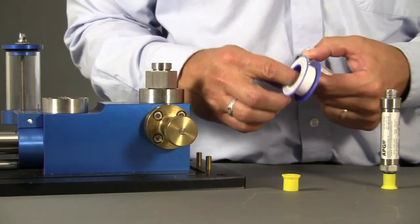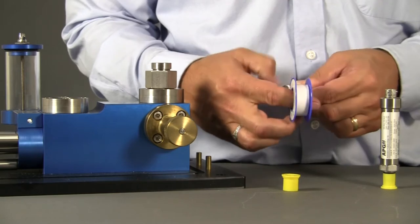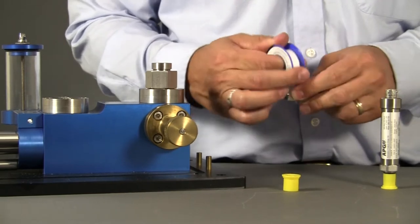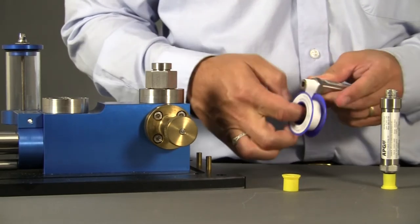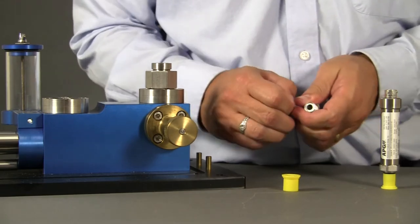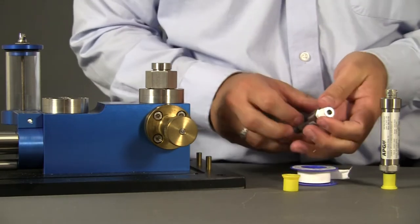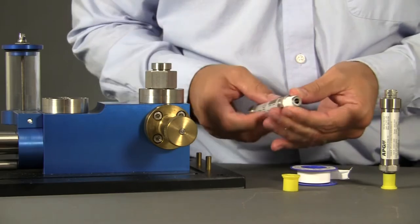Start by sealing your threads. For tapered threads, use Teflon thread tape or a sealant compound. You only need about three to five wraps to seal the sensor. This is because you can gum up your threads if it's too thick, and if it's too thin, you're not going to get a very good seal.